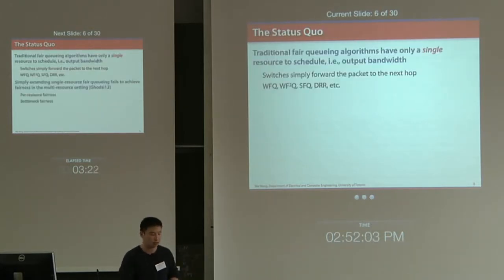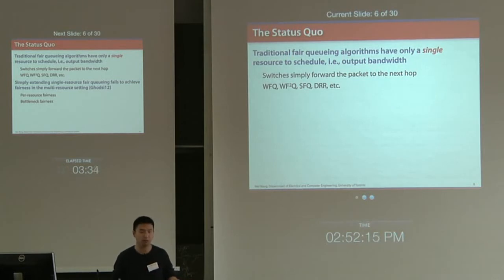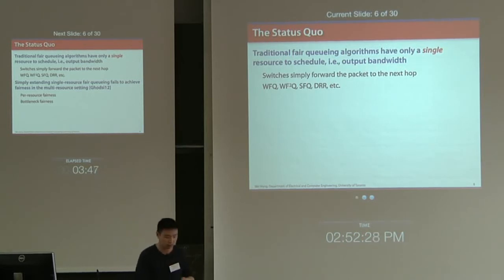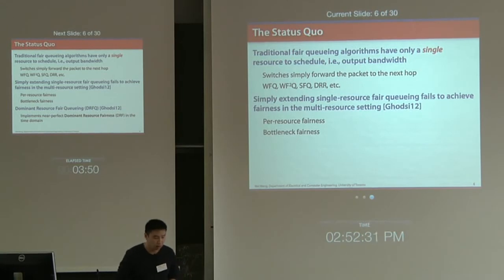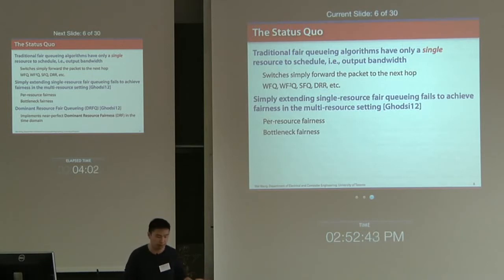Looking at the state of the art: fair queuing algorithms have been extensively discussed in the literature for decades, but they are only for single resources. Traditionally, the only function switches and routers perform is forwarding packets to the next hop, so the only bottleneck resource is link bandwidth. We have many algorithms for this. The question is: can we extend single-resource fair queuing to achieve fairness in multiple resource settings? According to recent work, a simple extension does not work.